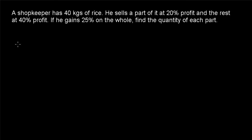Hi friends, welcome to today's class. Today's question is: a shopkeeper has 40 kilograms of rice. He sells a part of it at 20% profit and the rest at 40% profit. If he gains 25% on the whole, find the quantity of each part.